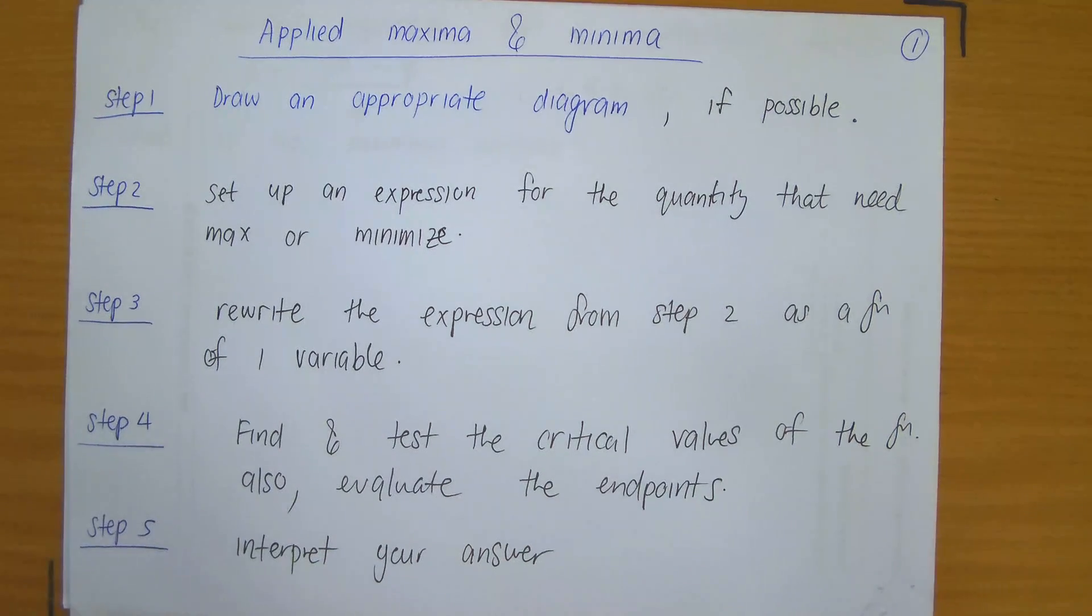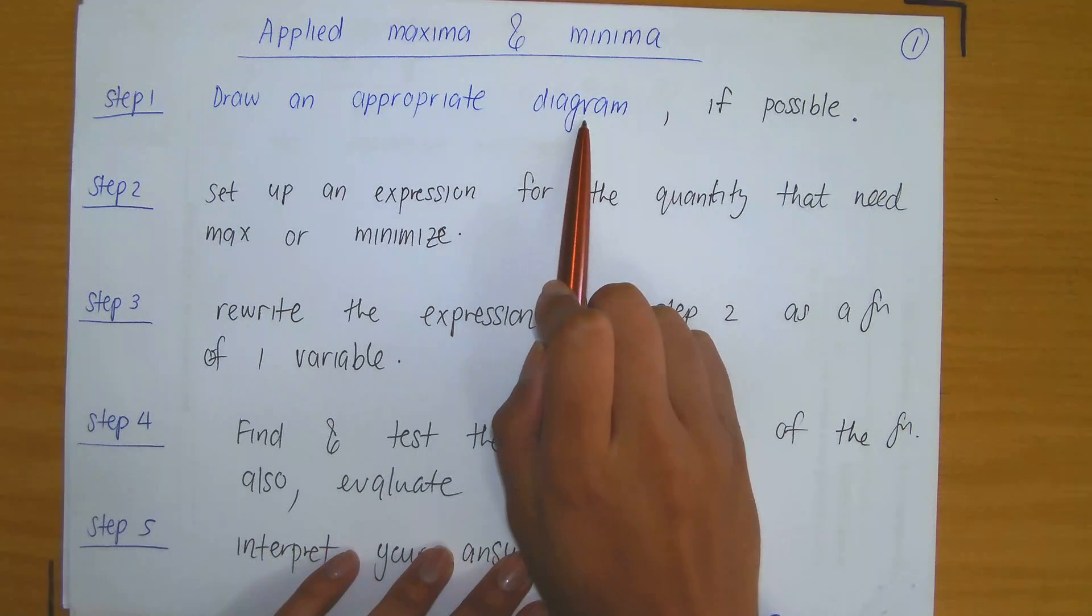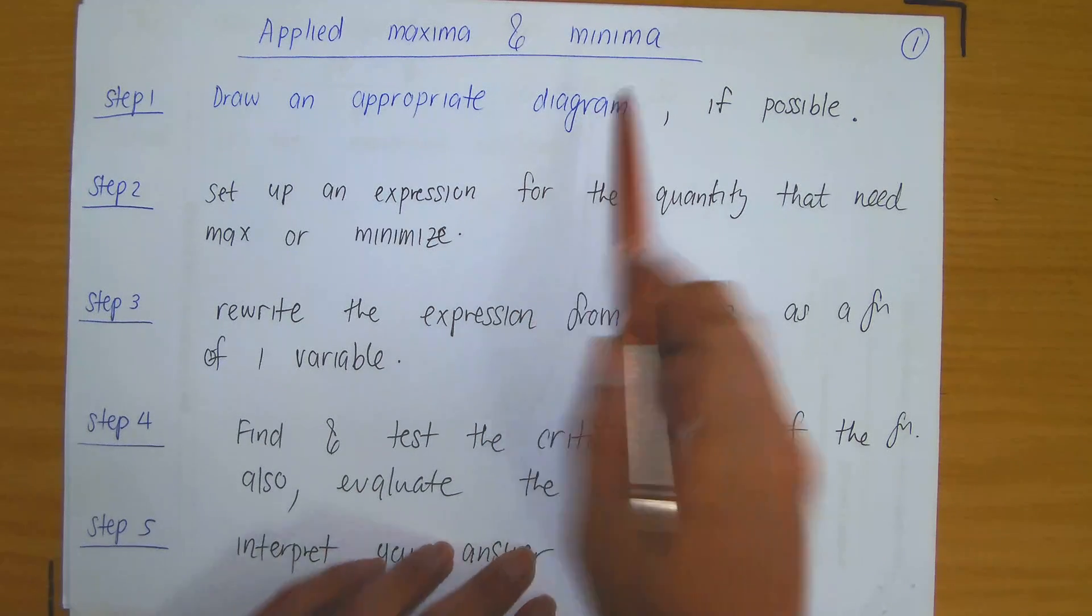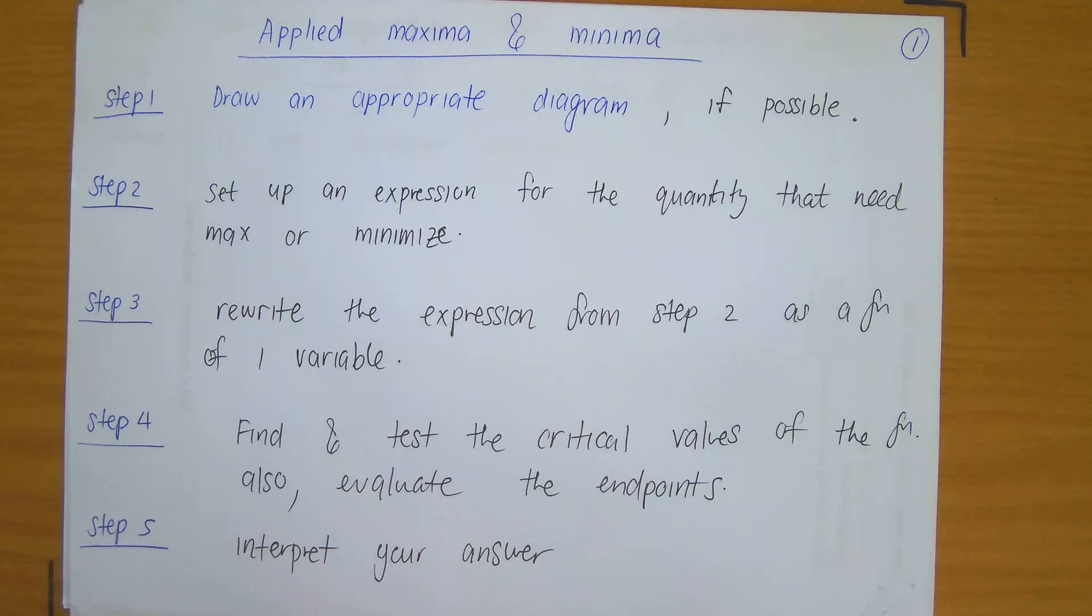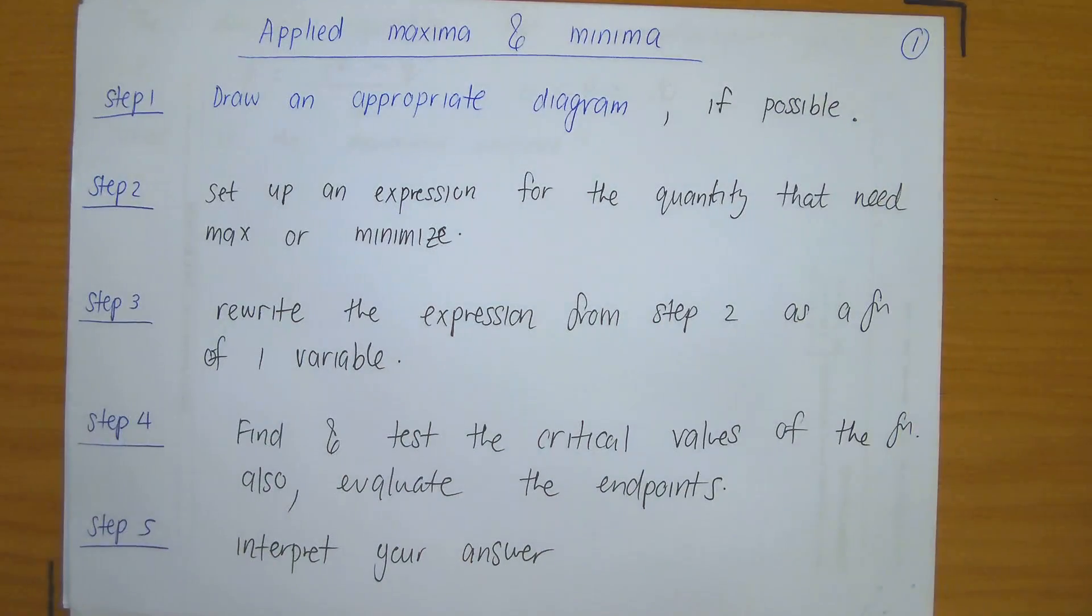So let's suppose that we were given a problem to maximize the profit of a firm. Then maybe in that case, you would not necessarily need a diagram. But then let's suppose that we were trying to minimize the cost associated with building a fence for some garden. Then it may be possible for you to draw a diagram which outlines the area that that fence will be covering.